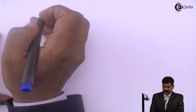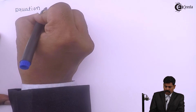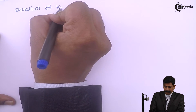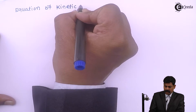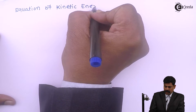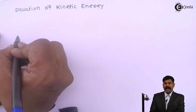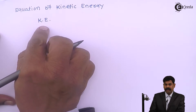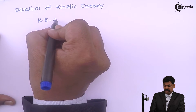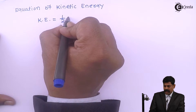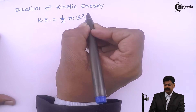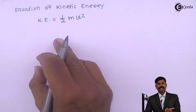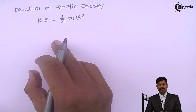Now the equation of kinetic energy. Kinetic energy is denoted by KE. Kinetic energy equals half times mv squared, where m is the mass of the body and v is the velocity of the body.